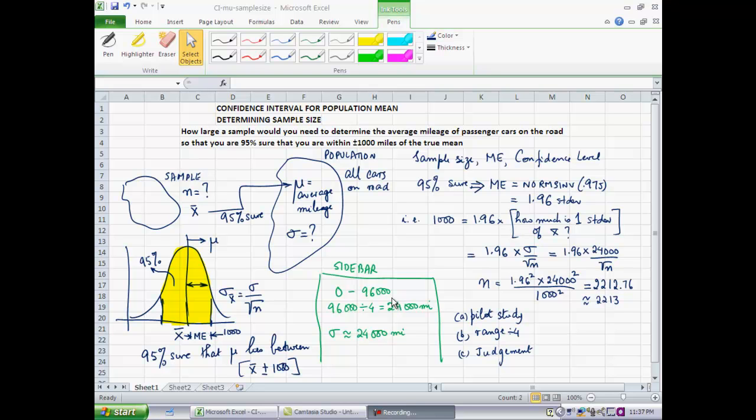My logic is that the mileage range of passenger cars on the road is between zero and 96,000 miles. I know that's not perfectly accurate, there are cars with two or three hundred thousand miles on them. But my educated guess is that the range is between zero and 96,000. If that's the case, then my estimate of the population standard deviation is one fourth of that, which is 24,000 miles. Why one fourth?